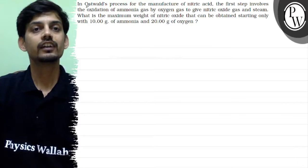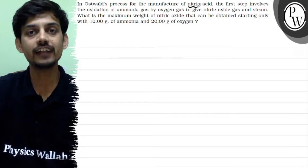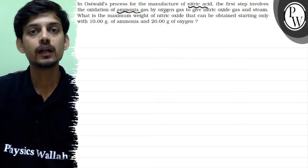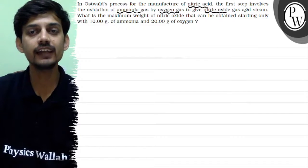Hello, the question says in Ostwald's process for the manufacture of nitric acid, the first step involves the oxidation of ammonia gas by oxygen gas to give nitric oxide gas and steam.